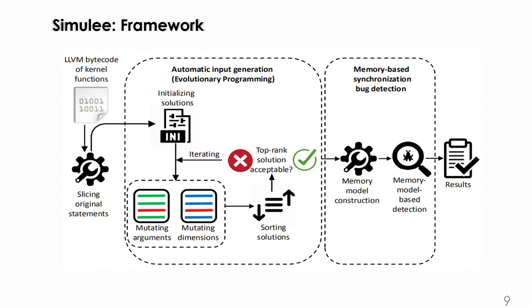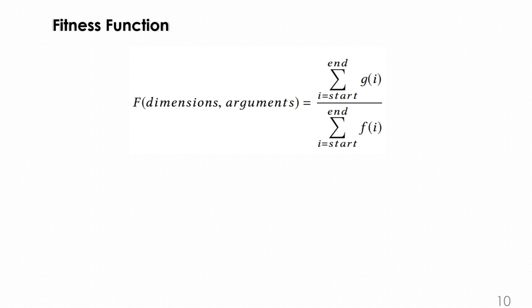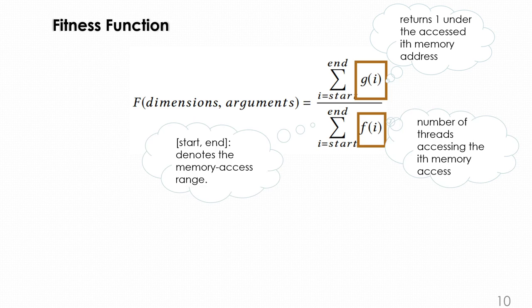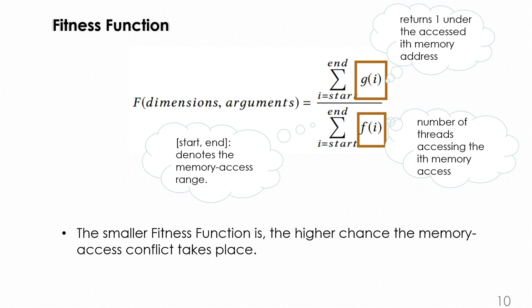In the input generation part, we need a fitness function to score each solution in order to get the optimal. Gi refers to a function that returns 1 when the i-th memory address is accessed by any thread and returns 0 otherwise. Fi returns the number of threads that access the i-th memory address. The smaller the fitness function is, the higher chance the memory access conflict takes place.